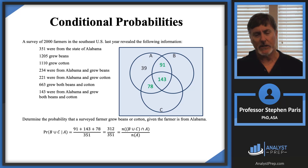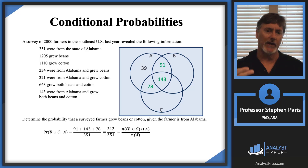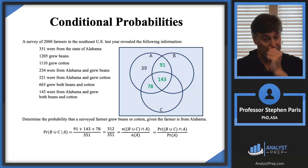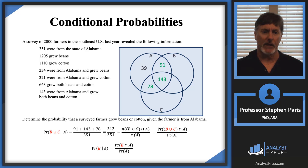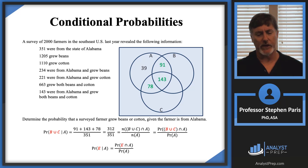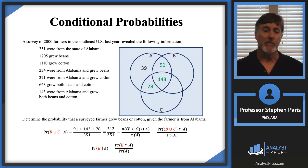I could divide both numerator and denominator by the number of outcomes in the sample, and I would get this probability. I want to write it this way to convince you we're not doing anything new here. This is just the probability of an event given another event — P(E|A), where E is now the event B ∪ C. It makes it look more complicated because I have three events — A, B, and C — but it's really just the same principle: P(E|A) = P(E ∩ A) / P(A). That's your formula.